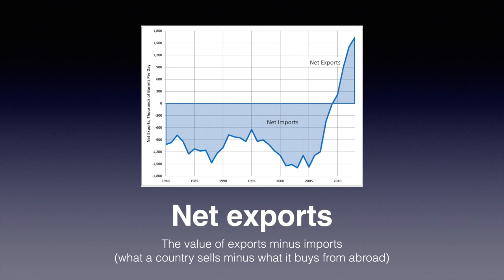Net exports are calculated by subtracting imports from other countries away from exports to other countries. Exports are considered an injection into the economy as money is coming from outside the country, and imports are considered a leakage as money is leaving the country. Per the World Bank, China's percentage is 22.1% of GDP, Pakistan is 10.6%, the US is about 12.6%, and the UK is at 27.2%. The reference is in the video description.